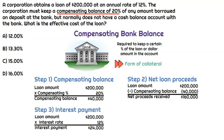In step three, we need to calculate the actual interest payment. Remember that interest rate of 12% is not on the net proceeds received — it's on the full amount of the loan, which is $200,000. So $200,000 times 12% means the interest payment is $24,000.